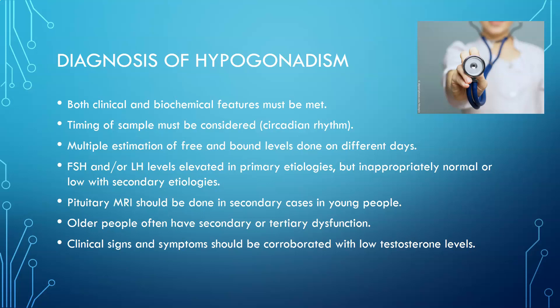FSH and LH levels can be elevated in primary etiology — where the problem is at the gonads — but would be inappropriately normal or low with a secondary etiology, at the level of the pituitary or hypothalamus. If the gonads are not responding, the pituitary and hypothalamus release higher levels of LH and FSH in an effort to stimulate the testes. But if the pituitary is damaged, those levels might be normal or low.